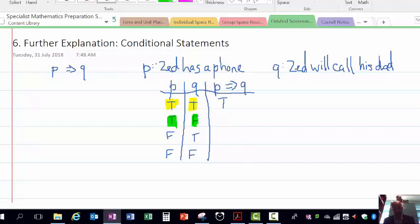Because remember, the compound statement says if Zed has a phone, then Zed will call his dad. Zed did have a phone, he did not call his dad, so we give that the value false. That's a special value, as you will see in a minute.